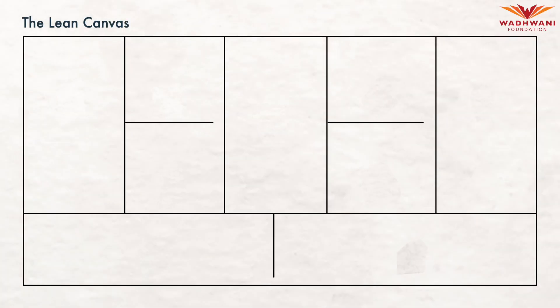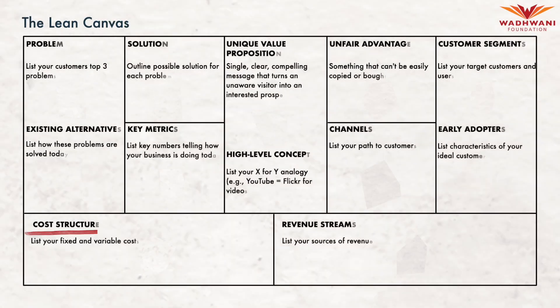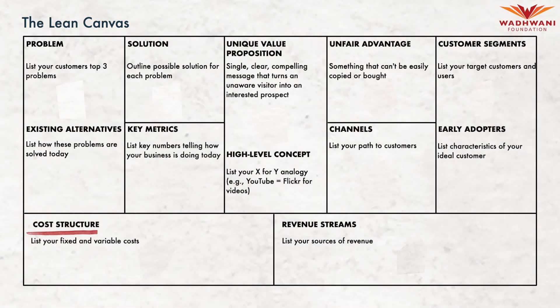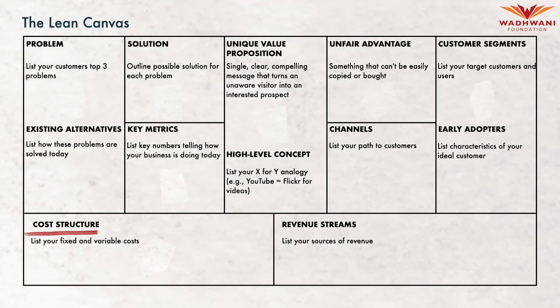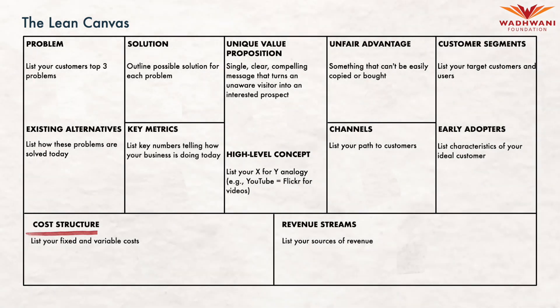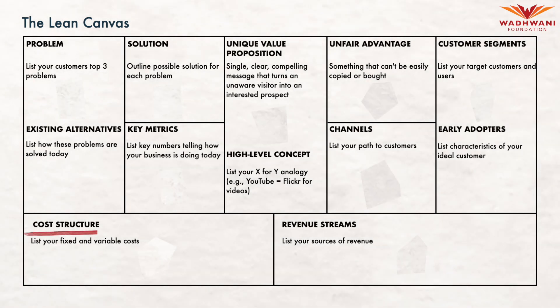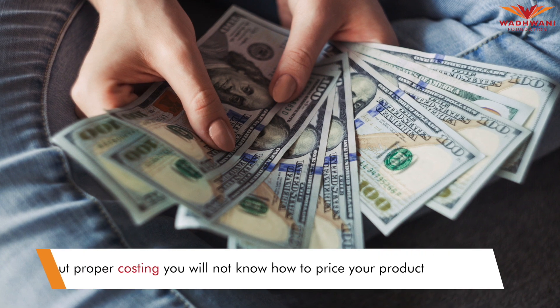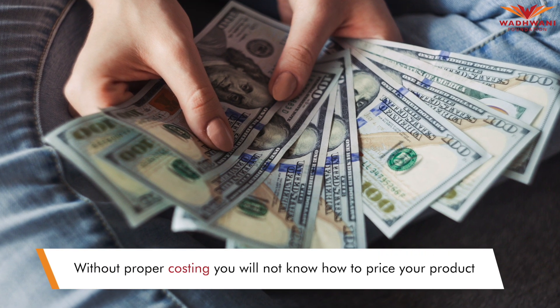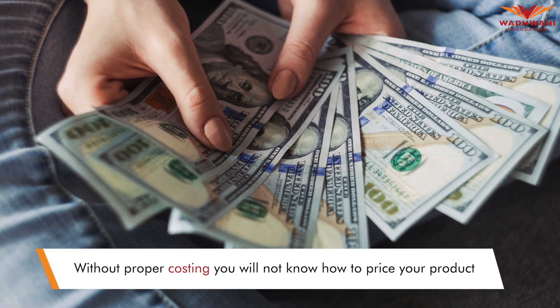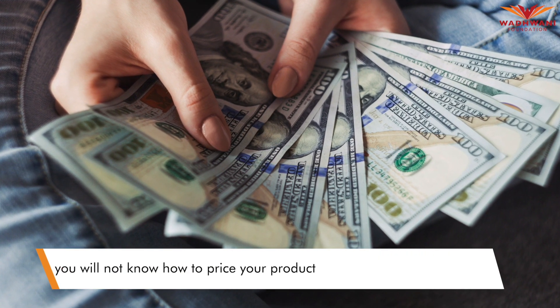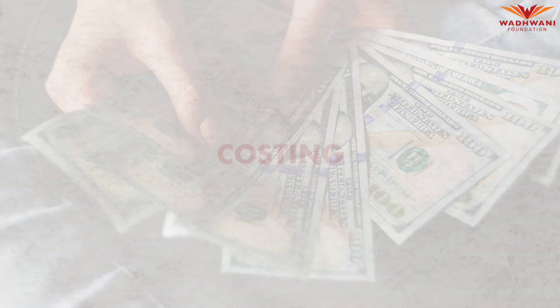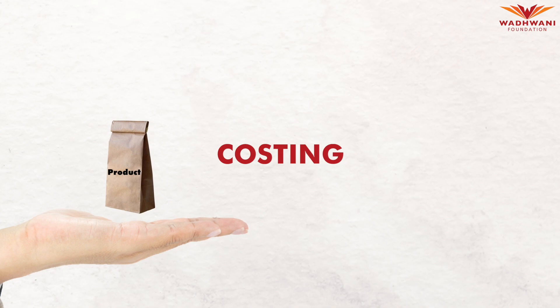Costing is something that the lean model talks about — obviously one of the most important aspects of pricing. Without proper costing, you will not know how to price your product right. So there is a product costing aspect and a business costing aspect.